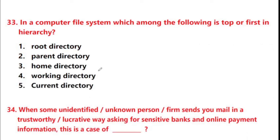Next question: in a computer file system, which among the following is top or first in hierarchy? Options: root directory, parent directory, home directory, working directory, current directory. Answer is option 1: root directory.